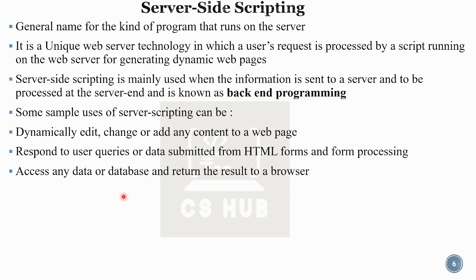In the back-end, there is a main database. For example, when a user logs in with a username and password, the details are registered and saved in the database. Next time the user logs in, the server checks the database, matches the username and password, and if correct, processes the login and displays the home page.